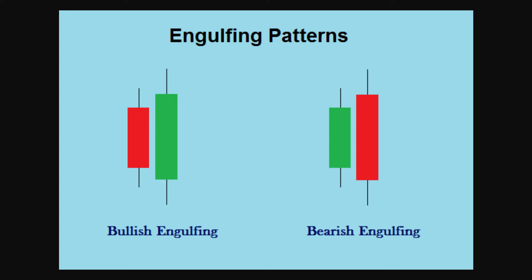The second type of candlestick pattern I look for are engulfing patterns. For a bullish engulfing candlestick pattern, that's the market opening lower than where it closed yesterday, potentially trading below its low as well, and then closing above the open of the prior candle — thus that candle is engulfing the previous one. And vice versa for bearish engulfing: the market gaps up, may trade up, then has a swift reversal.